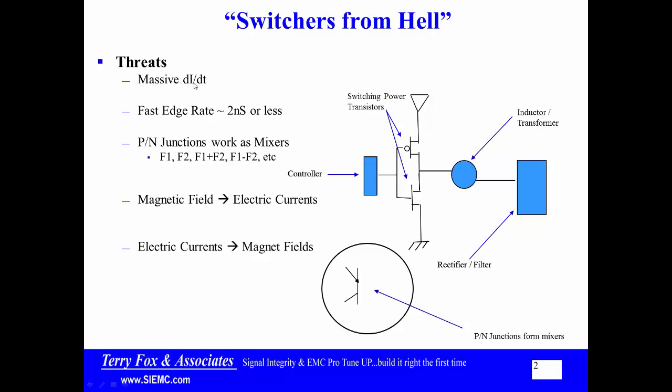The first thing is massive DI-DT. When I look at these MOSFETs that are turning on and off the power going into this inductor or transformer, realize that this thing is switching on and off someplace between 7 and 10 amps. It is doing it probably at a megahertz kind of rate. It probably has edge rates of 2 nanoseconds or less.